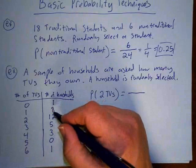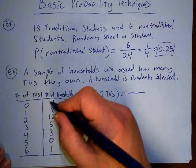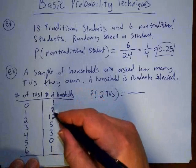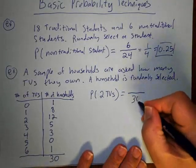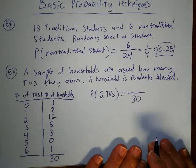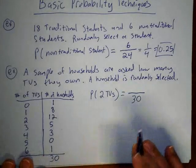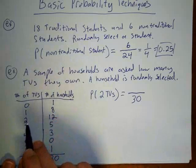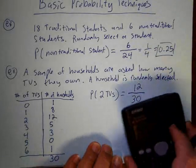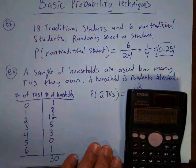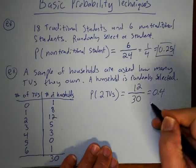To get the total number of outcomes, add up all the households: 1+8+12+5+3+0+1 = 30 households total. That is the bottom number — the total number of outcomes. Out of those 30, how many had 2 TV sets? Going back to the table, 12 households had 2 TVs. So the probability is 12 out of 30, which equals 0.4.